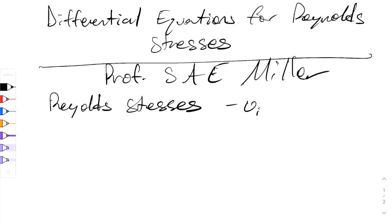So first of all, we'll look at Reynolds stresses, which are, of course, negative ui prime uj prime bar, where the bar is the averaging quantity, and these can be directly derived from the Navier-Stokes equations.